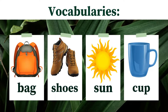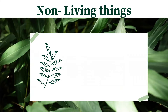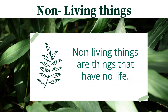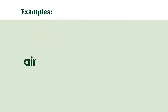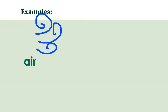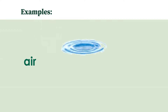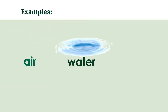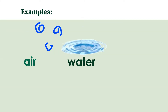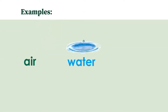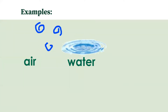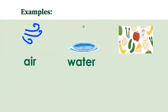Now let's define what non-living things are. Non-living things are things that have no life. For example, we have air — can you say that again? Air. Let's spell the word air: A-I-R, air. We also have water. Can you say water? Good job. Let's spell the word water: W-A-T-E-R, water.